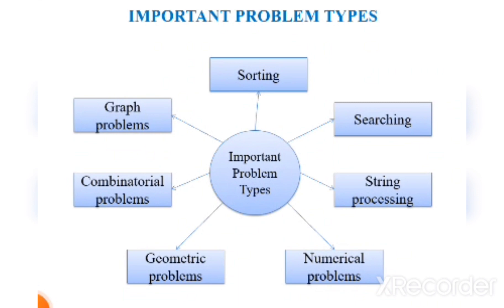The next topic in DAA is important problem types. We'll be having seven important problem types that deal with DAA. The first problem type is sorting, the next one is searching, third one is string processing, fourth is numerical problems, fifth is geometric problems, sixth is combinatorial problems, and seventh is graph problems.